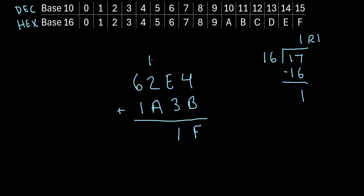We repeat the process. What is 1 plus 2 plus A? Well, 1 plus 2 is 3. A is the same as 10. So we have 3 plus 10, that's 13. And 13 is represented by a D in the hexadecimal system. Lastly, we have 6 plus 1, that's 7. So our final answer is 7D1F.